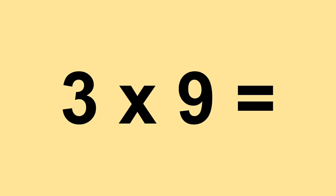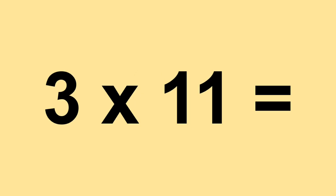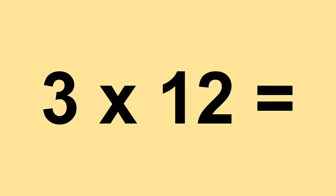Three times nine equals twenty-seven. Three times ten equals thirty. Three times eleven equals thirty-three. Three times twelve equals thirty-six.